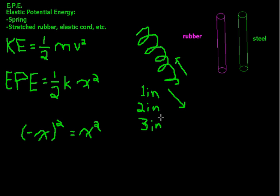That's really all there is to elastic potential energy. Kinetic energy and elastic potential energy sound physics-y and difficult, but there's not much to them. There are three variables. They'll either give you the energy and displacement and tell you to solve for the constant, or give you the spring constant and how far it's stretched and ask how much work you have to put in. It's just putting in a couple variables and solving a simple algebraic equation.